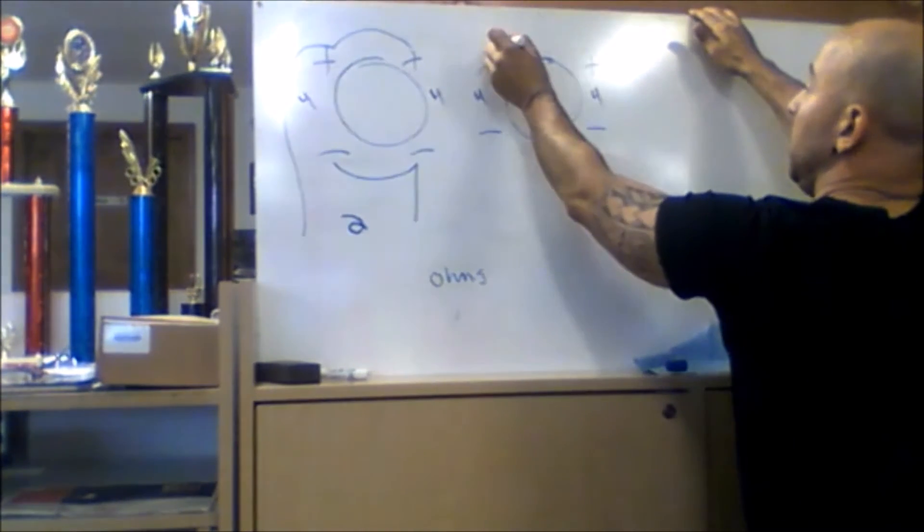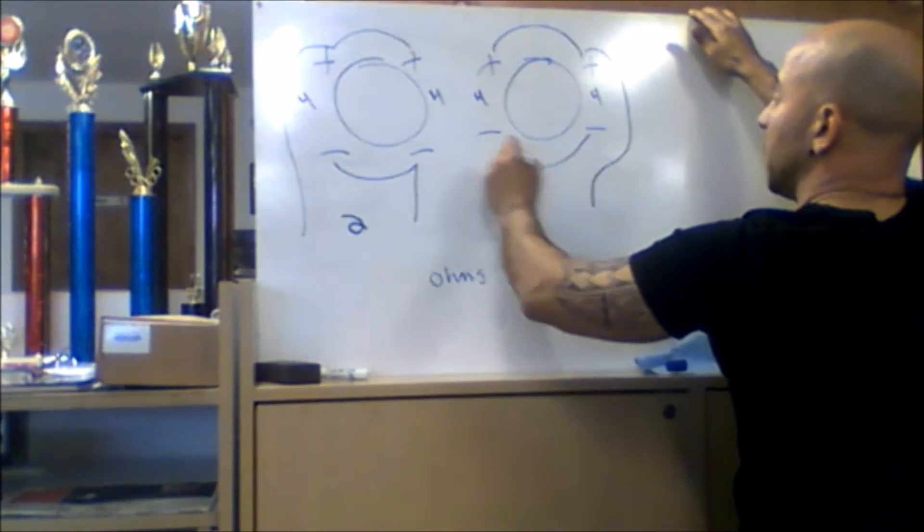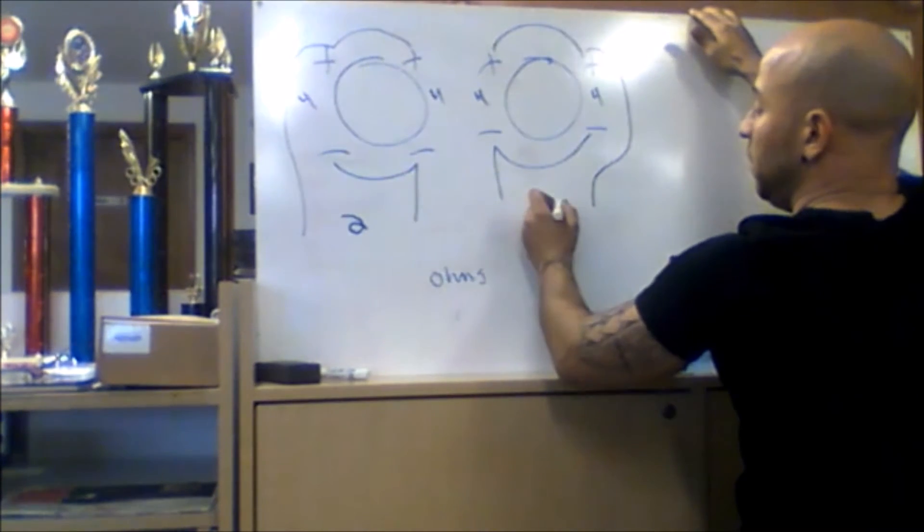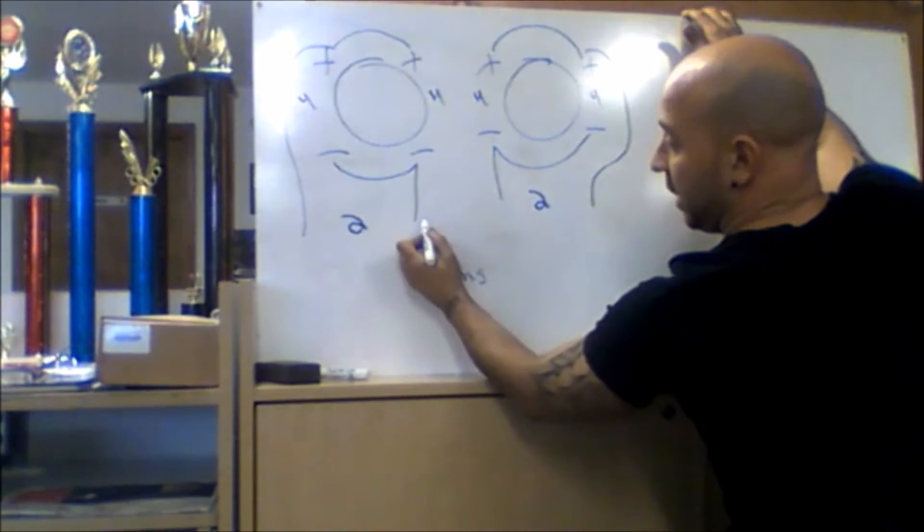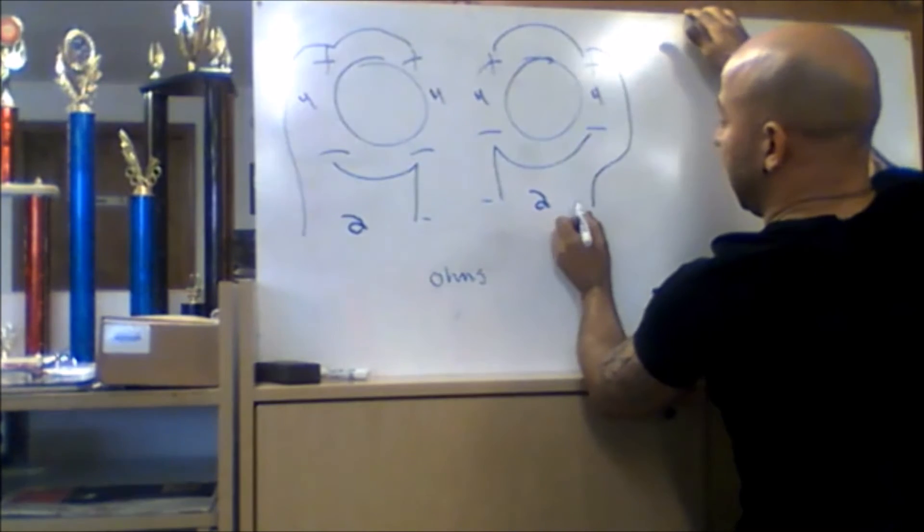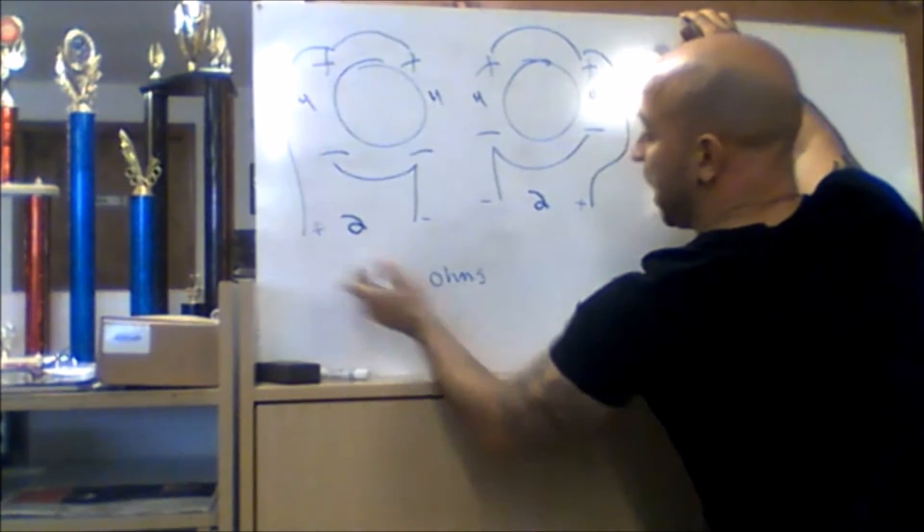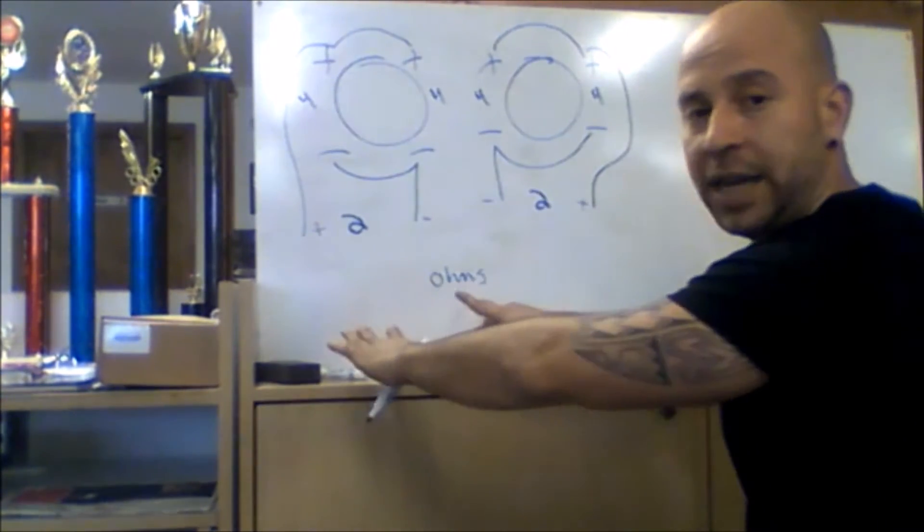Do the same on this sub and you're at two ohms there. Now this lead is negative, this lead is negative, this is positive, and this is positive. If you connect it this way on a two channel amp, your connection is at two ohms.